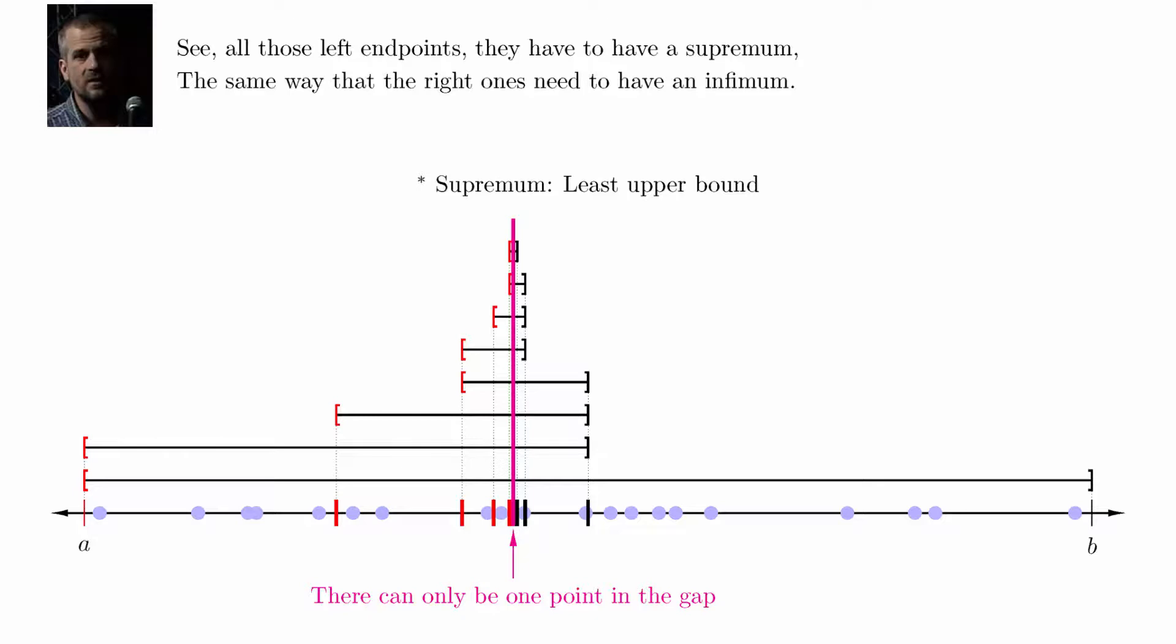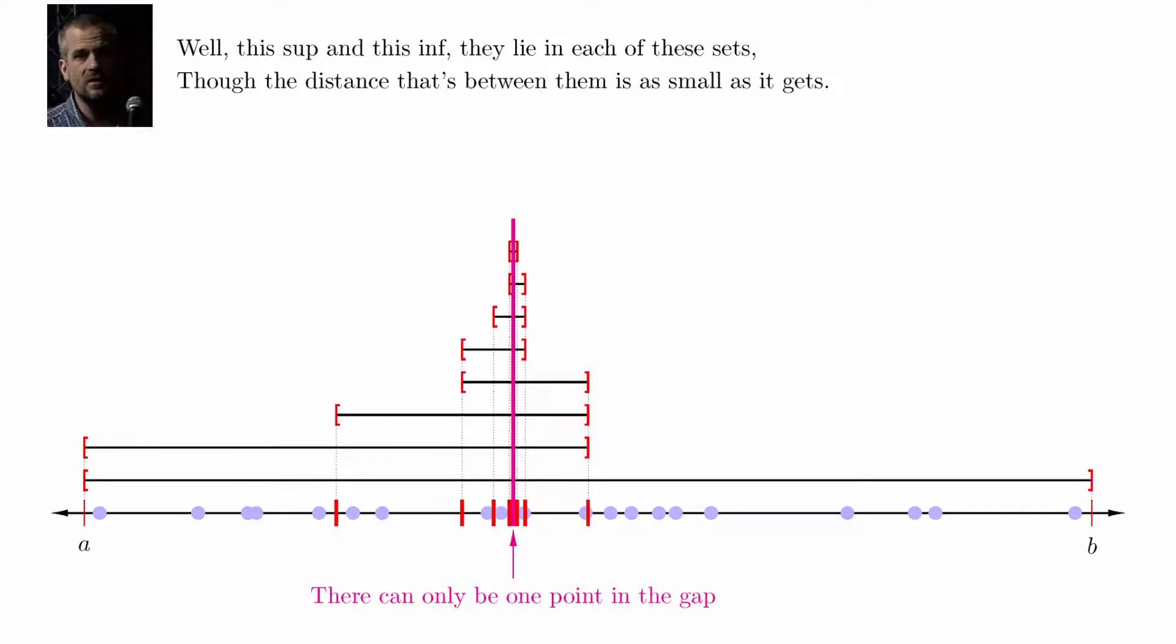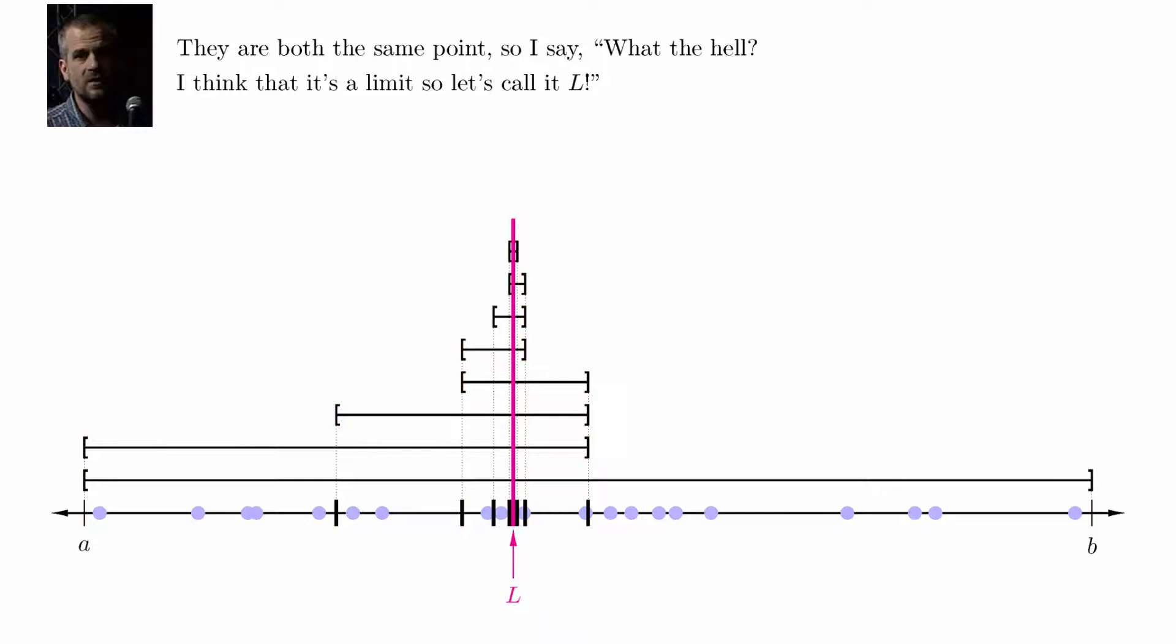See all those left end points, they have to have a supremum. The same way that the right ones need to have an infimum. Well, this soup and this inf, they lie in each of these sets. The distance between them is as small as it gets. They are both the same point, so I say what the hell? I think that it's a limit, so let's call it L.